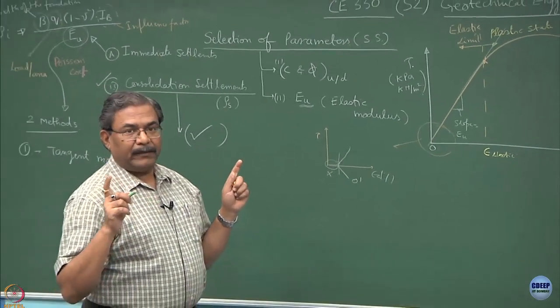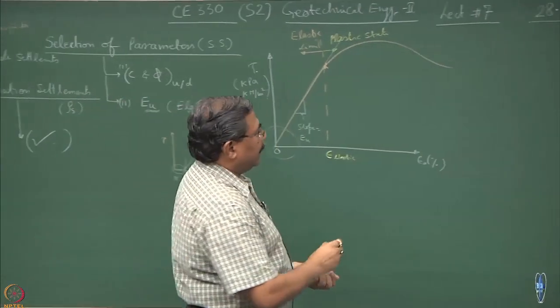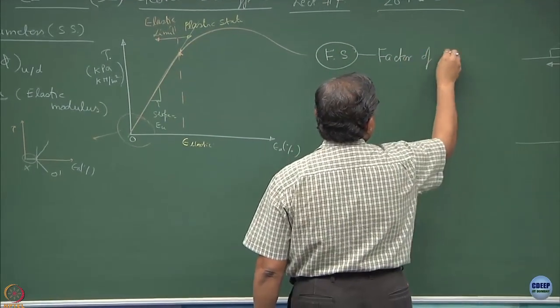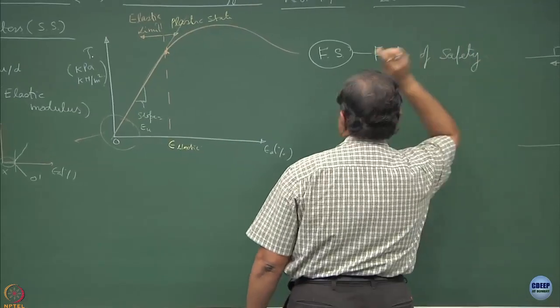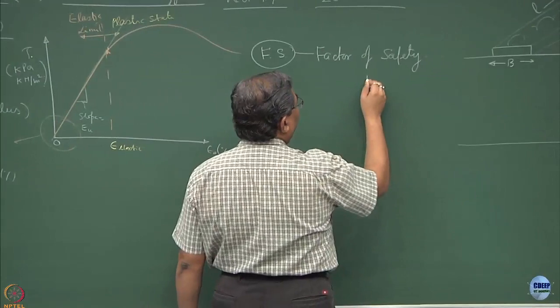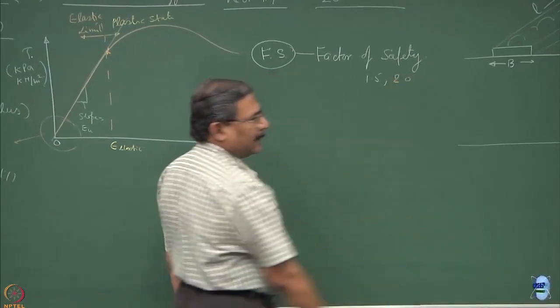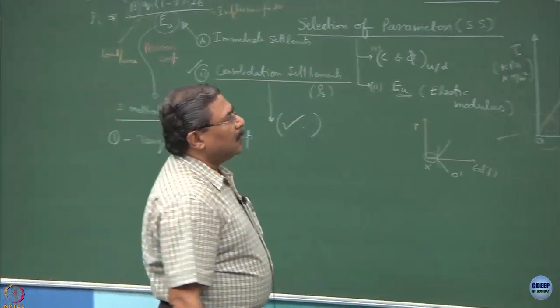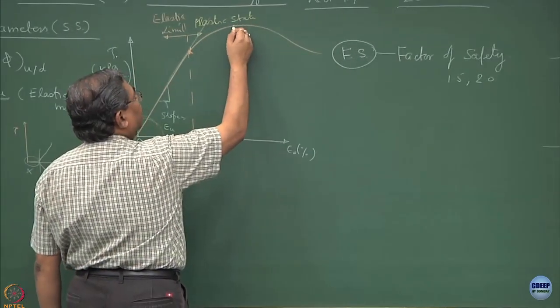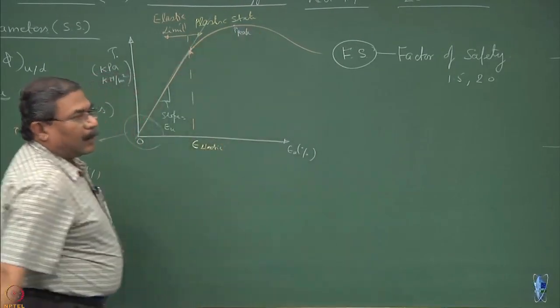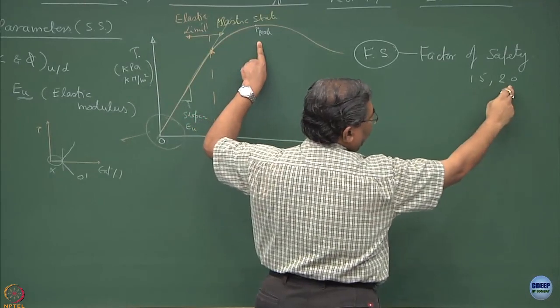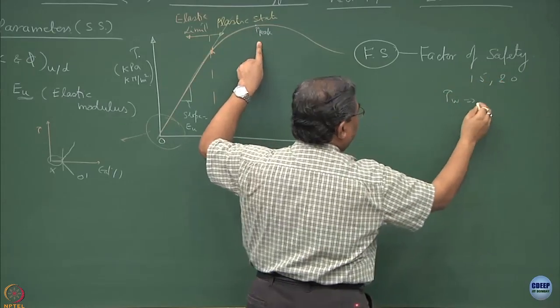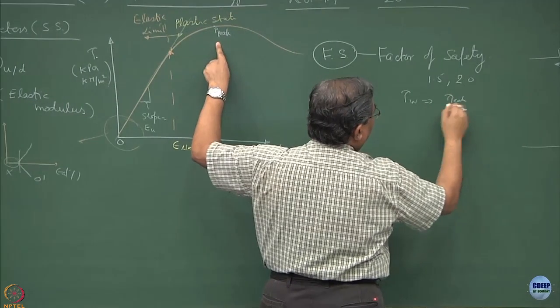Judgment comes when you have this type of relationship and what I define as the factor of safety parameter. If I define the factor of safety as 1.5 or 2, normally these are the magic numbers used for designing foundations under ordinary circumstances. The point where I am getting the peak value, I will reduce the peak by 1.5 or 2.